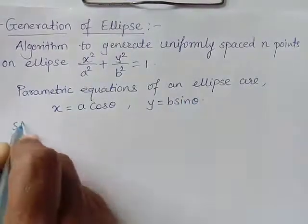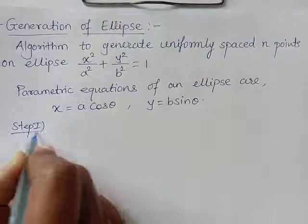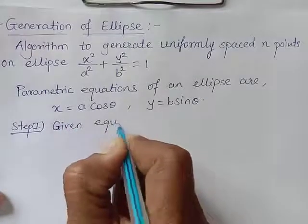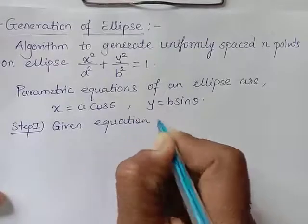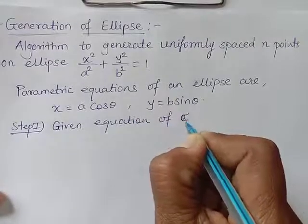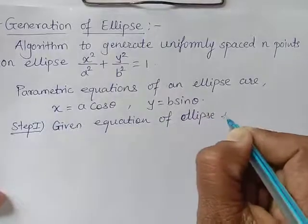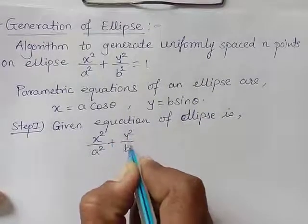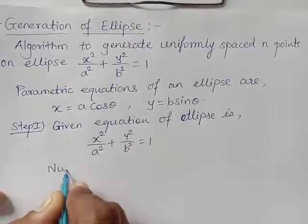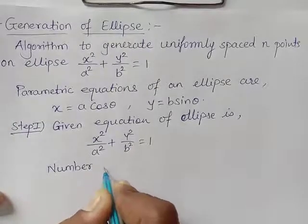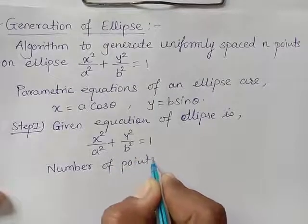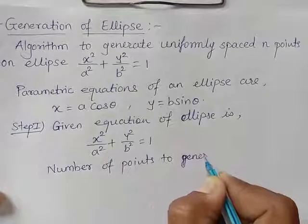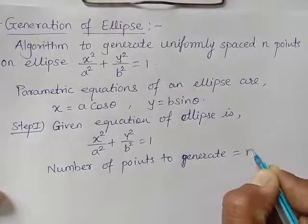What is Step 1 here of the algorithm? Step 1 says: the given equation of the ellipse is x squared by a squared plus y squared by b squared equal to 1. Then, the number of points to generate is n points.